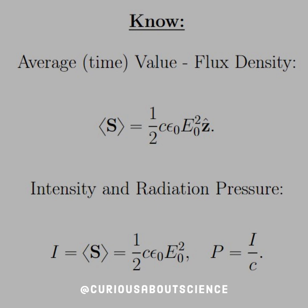In this case, with the Poynting vector, what we have is one half C epsilon naught E naught squared in the z-hat direction. The intensity and radiation pressure, well, that becomes a scalar and we're just looking for I equals the average value of S. And then we see that P, or the pressure, is equal to I over C.